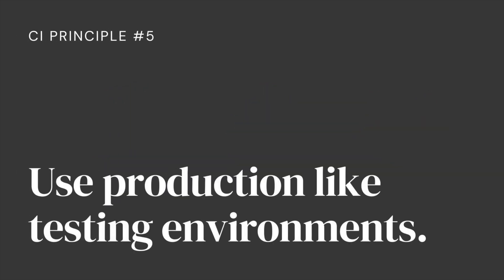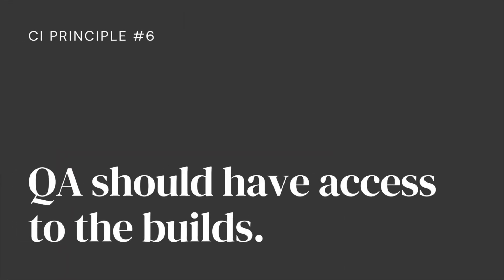Principle number five: use production-like testing environments. The testing environment should be as similar as possible to the eventual production environment, with configuration as similar as will be encountered in production. This ensures the usefulness of the tests and keeps expectations consistent throughout the deployment. Principle number six: QA should have access to the builds. Along with developers, QA must have constant access to the builds so that any failure to meet product requirements can be found as soon as possible. Early detection will lessen the danger of having to rework everything later.